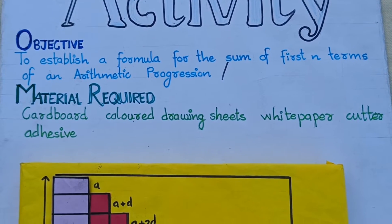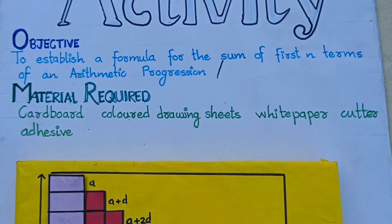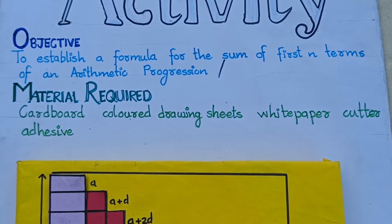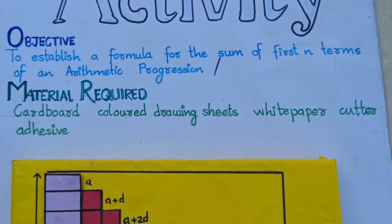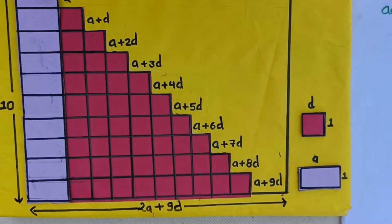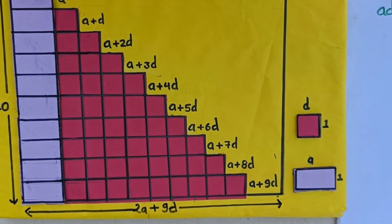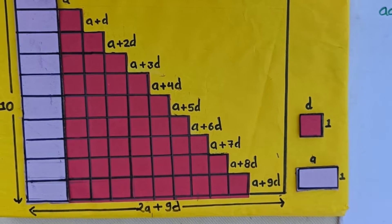Hello everyone, I am Akansur Akunsi from Jawaharnaboday Vidale Dhamangaon, Dindore. Today I am going to present my maths activity. The objective of my activity is to establish a formula for the sum of first n terms of an arithmetic progression. So let us start.